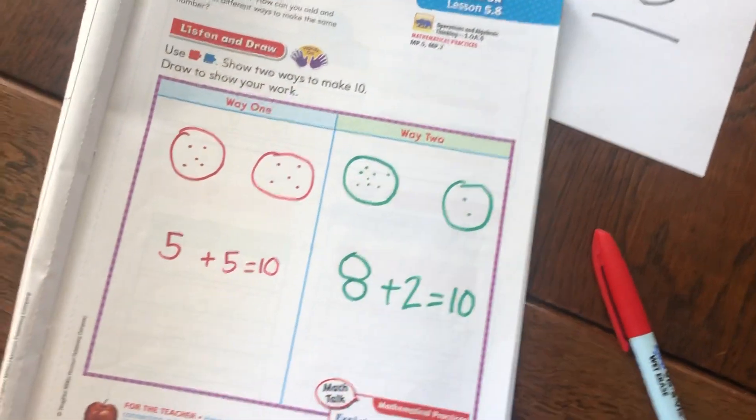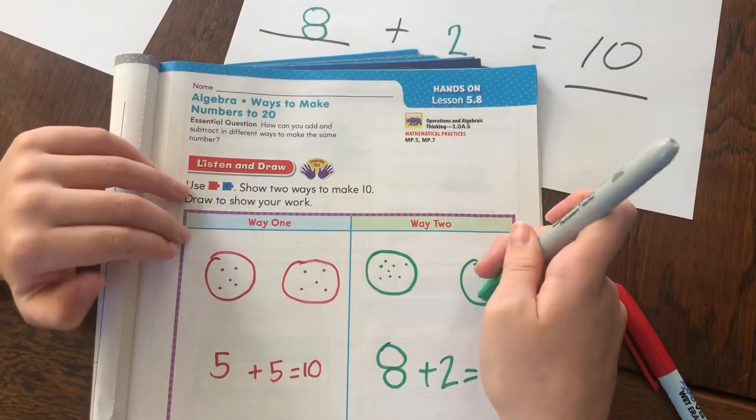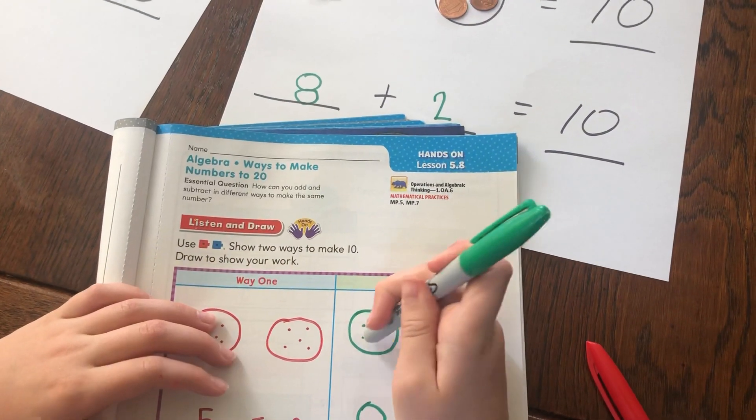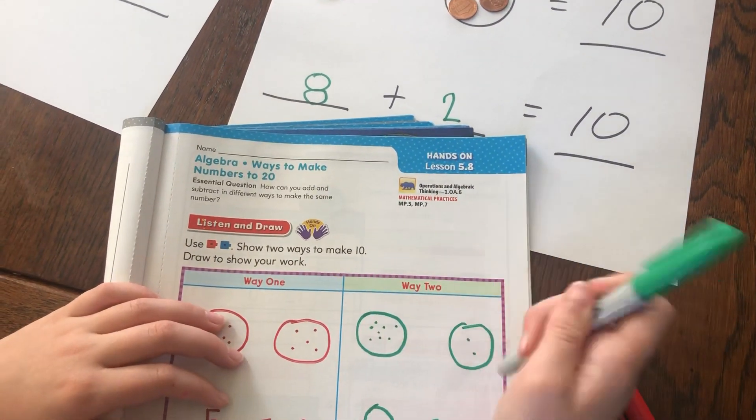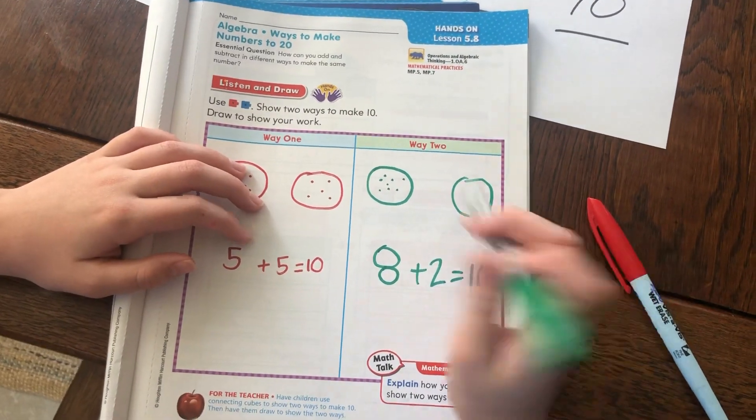And then over here, what did you do? Well, over here, I put eight dots in here because I had eight pennies in this circle and two dots in here because I had two pennies in this circle. And if you count them, look, it says one, two, three, four, five, six, seven, eight, and one and two. So I wrote down here, eight plus two equals ten.